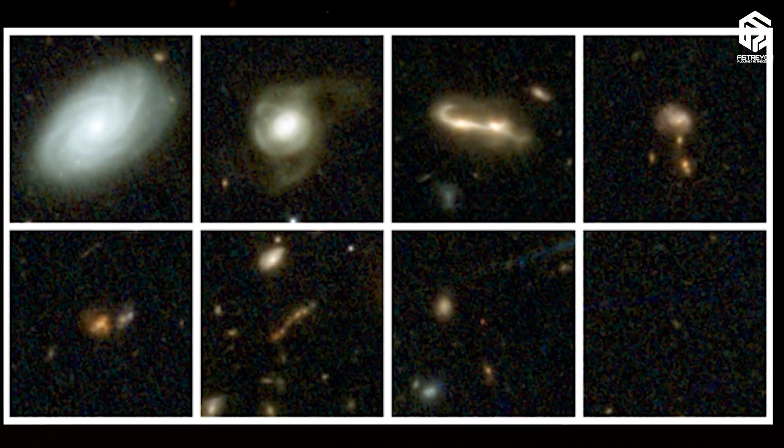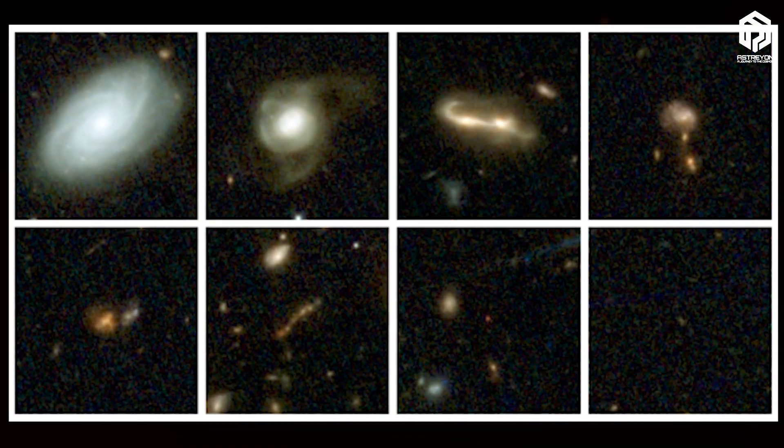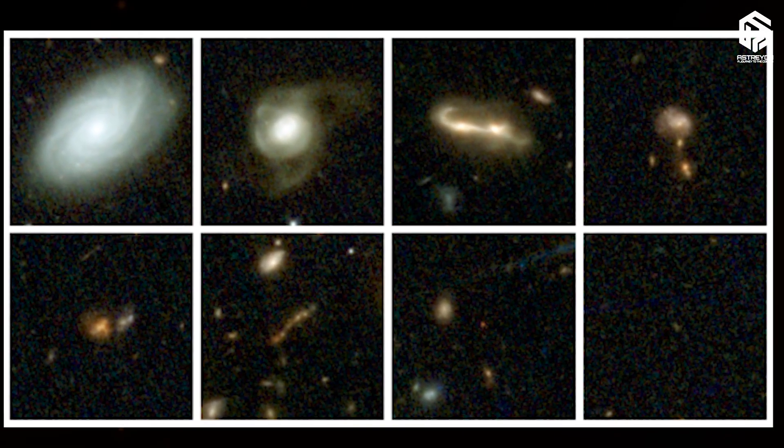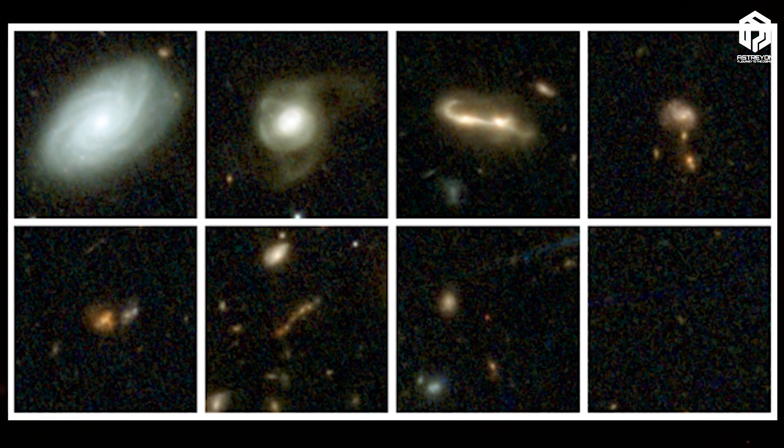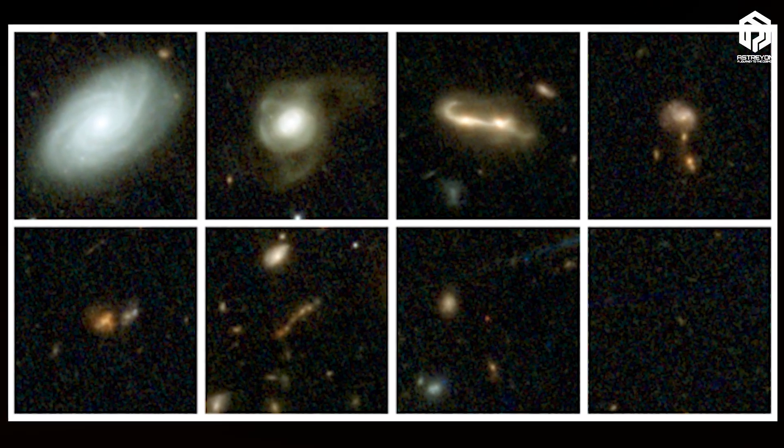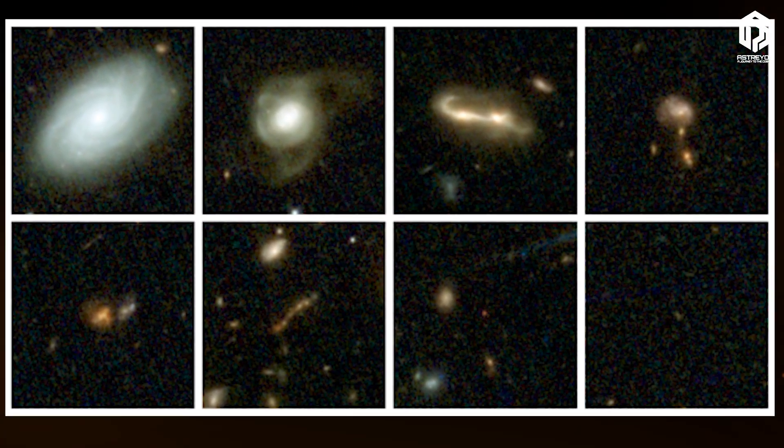This map, combining over 10,000 exposures, shows early galaxies appearing 10 times more than expected, aiding understanding of reionization, the era when the universe transitioned from neutral fog to transparent space.